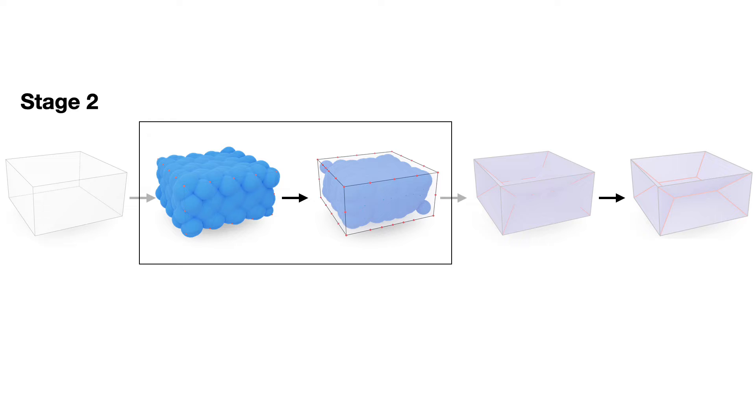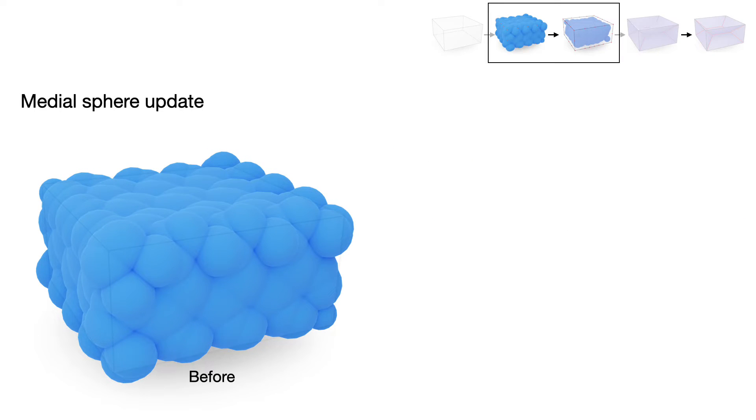In the second stage, we update those inner sphere candidates as close as possible to their ground truth position and radii using our sphere updating strategy.